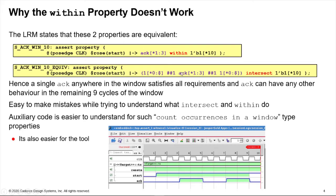So this sub-sequence ack [*1:3] is satisfied by a single occurrence of ack. So that's the reason we see the behavior we do. So it's very easy to make mistakes when using operators like intersect and within.